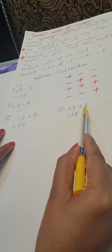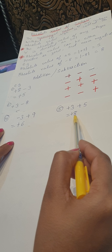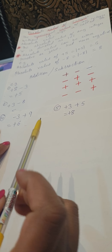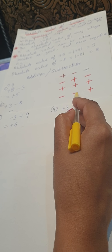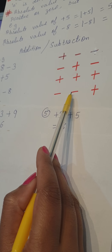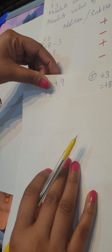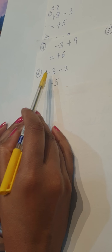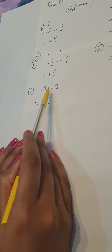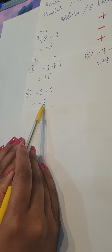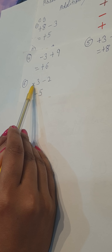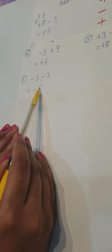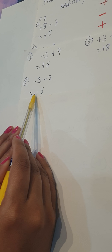Rule 3: plus plus is always plus. For example, plus 3 plus 5 equals plus 8. It is very simple — 3 plus 5 is 8 and the sign remains plus. Rule 4: minus minus — do the addition, but the sign is always minus. For example, minus 3 minus 2: add them to get 5, but the sign is minus, so the answer is minus 5.